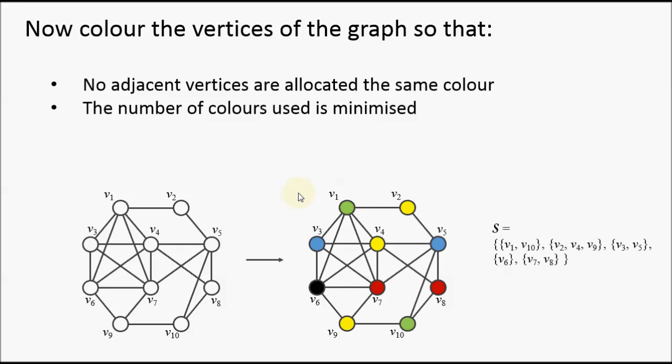One way of writing down such a solution is as a set of sets. So here we have a set, and each set within this lists the vertices assigned to a particular color class. So vertex 1 and vertex 10 are together because they have the same color. Vertex 2, 4 and 9, these three here, and so on.